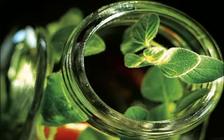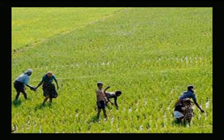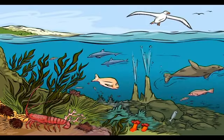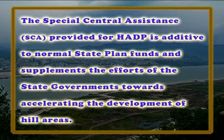The main objectives of the program continue to be eco-preservation and eco-restoration. However, the needs of the people, particularly their economic needs, have to be met if the eco-system is to be preserved. Therefore, ecology and economy of the area have to be developed. The Special Central Assistance, that is SCA, provided for HADP is additive to normal state plan funds and supplements the efforts of the state governments towards accelerating the development of hill areas. This SCA is not meant to be utilized for normal state plan activities.